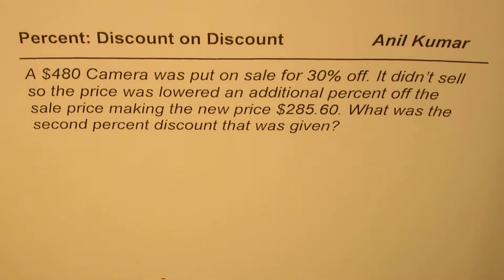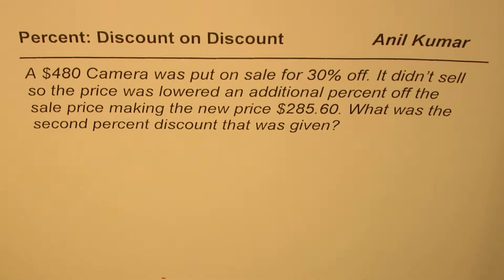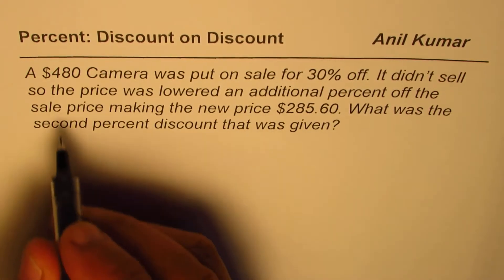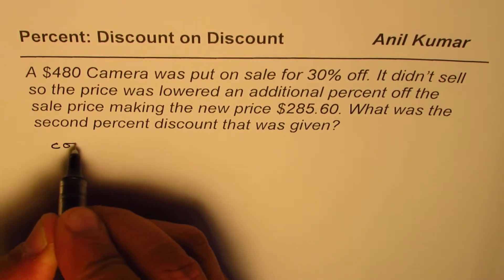I'm Anil Kumar and in this video we'll discuss another method of solving discount on discount problems. The question here is: a $480 camera was put on sale for 30% off. It didn't sell, so the price was lowered an additional percent of the sale price, making the new price $285.60. What was the second percent discount that was given?